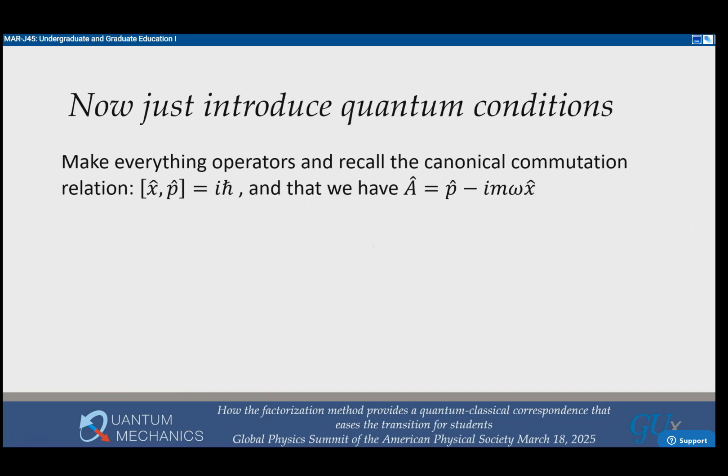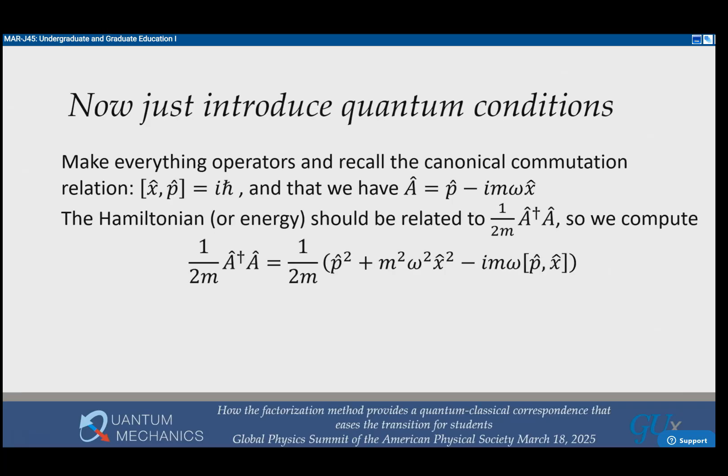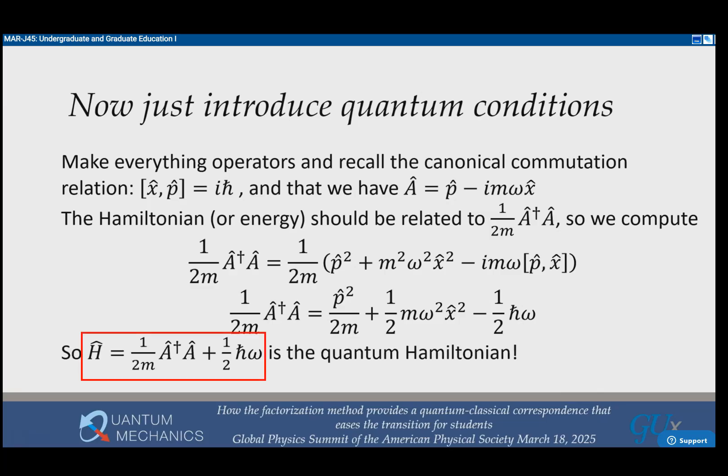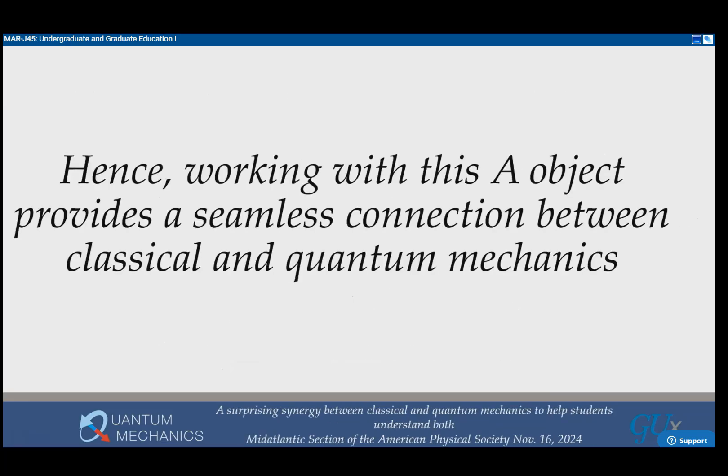How do I go to quantum mechanics? You make everything into operators and recall that the commutator of X with P is i h bar. This requires some work to get to this point, but under that assumption, if you take this operator and look at A dagger A divided by 2M, which was the energy previously, you can calculate it and you'll get this extra term from the commutator. When you evaluate it, you can bring it to the other side, and you find the Hamiltonian is one over 2M A dagger A plus one half h bar omega. It's the quantum Hamiltonian.